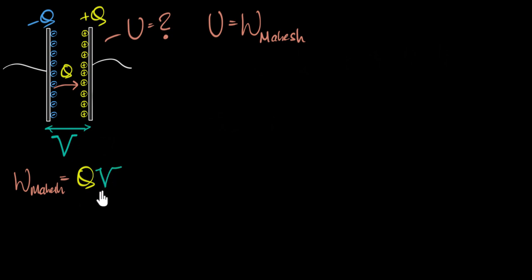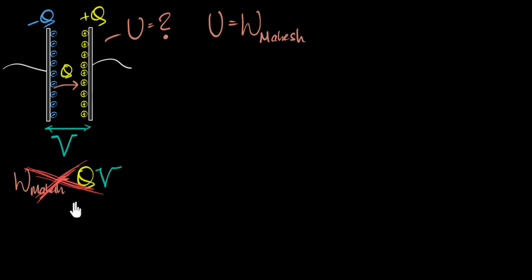And that itself must be the potential energy stored in the capacitor — but that's wrong. I want you to think deeply about why this is wrong. It's not enough to just accept it; really try to understand why. Can you pause the video and think about why Q times V is not correct?